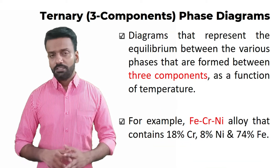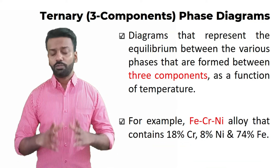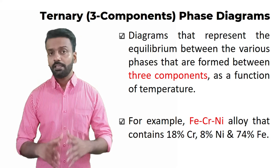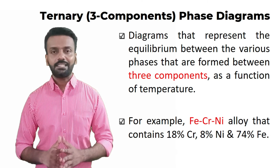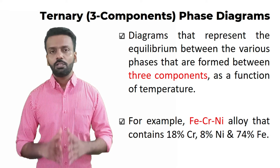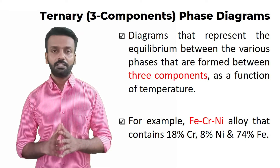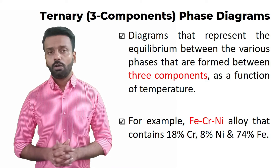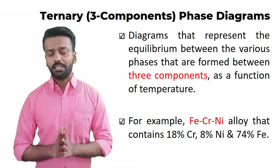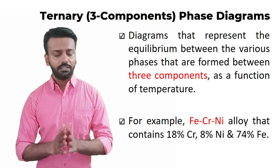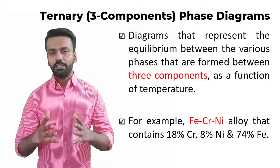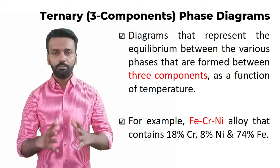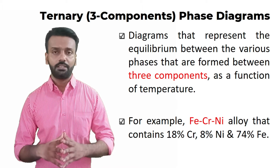The next one is the ternary phase diagram. In a ternary phase diagram there are three components plotted against temperature. An example is an iron-chromium-nickel alloy. In an upcoming slide we will see how to find out the different phases that are existent and how a typical ternary phase diagram looks.